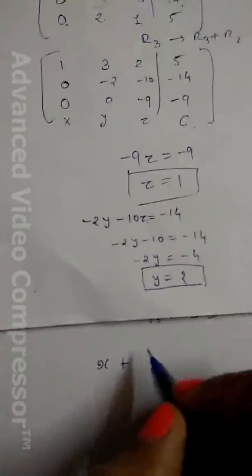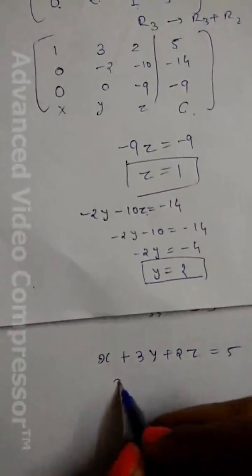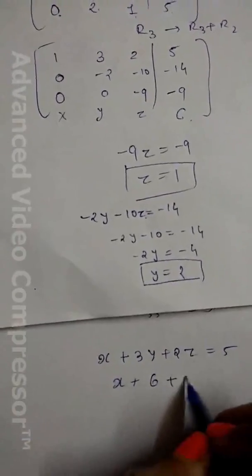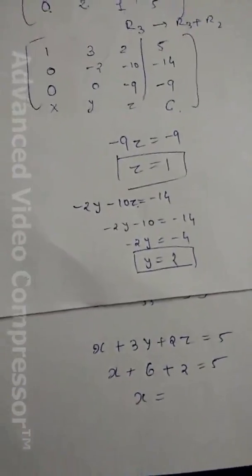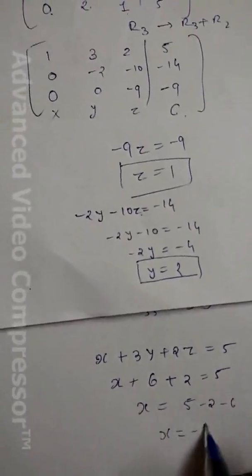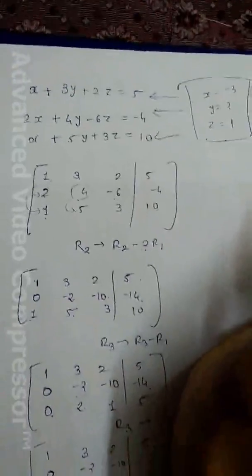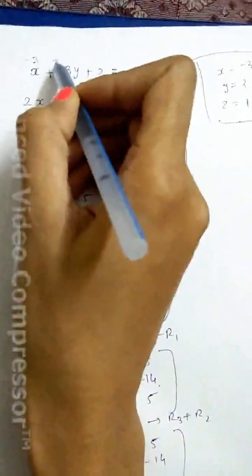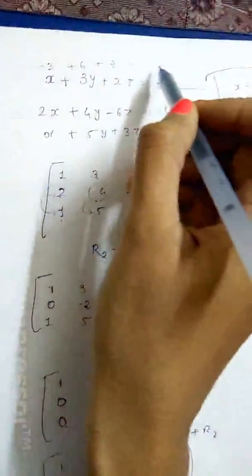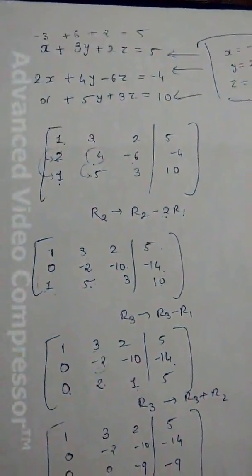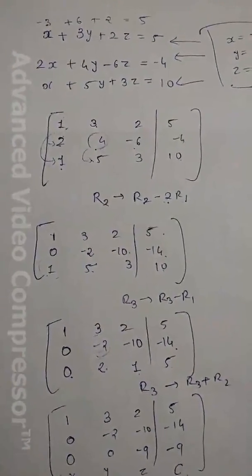From the first equation: x + 3y + 2z = 5. Substituting z = 1 and y = 2: x = 5 − 6 − 2 = −3. So the solution is x = −3, y = 2, z = 1. To verify, substituting into the first equation: −3 + 2 − 6 + 1 − 2 = 5. Yes, correct! This is the verification that our solution is right. This is how Gauss elimination method works.